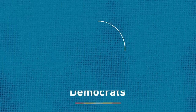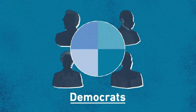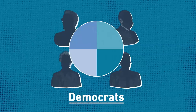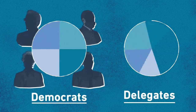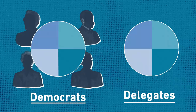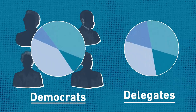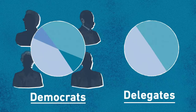On the Democratic side, delegates are given out proportionally. So if a candidate gets 30% of the votes, they get 30% of the delegates. But there's a caveat: if you don't get at least 15% of the vote, you don't get any delegates. So 14% of the vote means no delegates for you.